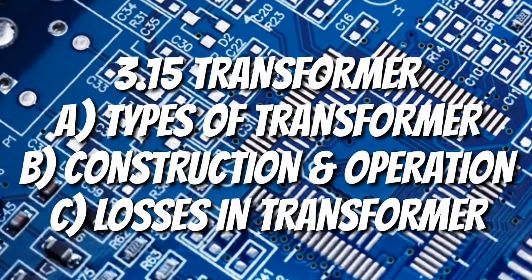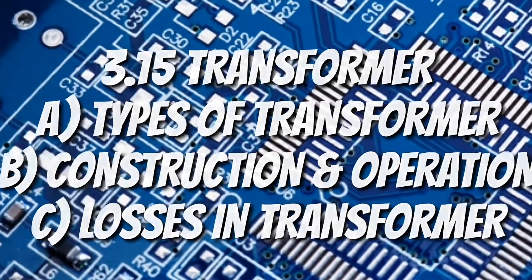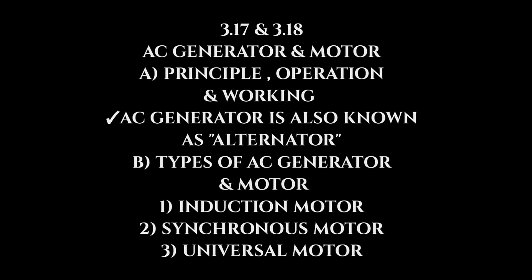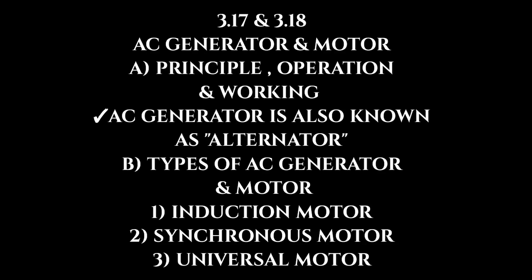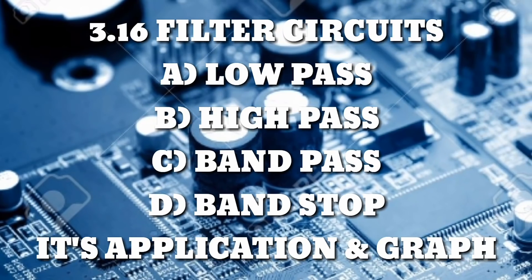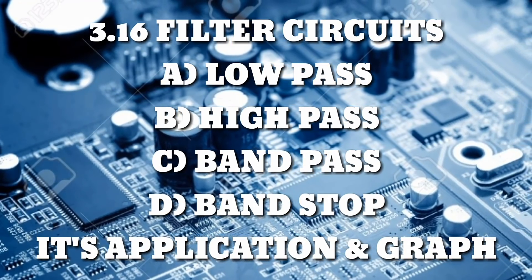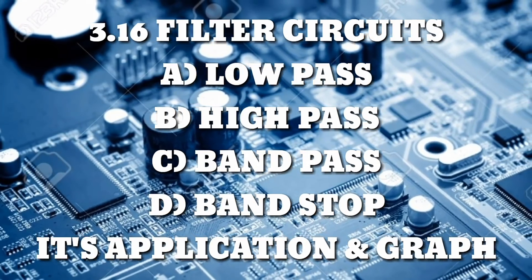Next, 3.15 is the transformer. It generally includes the types of transformer, its construction, operation and losses, which I have already covered in DC generator. Now the most important topics are 3.17 AC generator and 3.18 AC motor. In AC generator, you need to remember the principle, operation and construction of AC generator and motor. Also remember that an AC generator is also known as an alternator. The types of AC generator and AC motor include induction motor, three-phase induction motor, synchronous motor, universal motor and the methods used in these motors. Also, I didn't forget 3.16, the filter circuit, which includes low-pass, high-pass, band-pass and band-stop filter circuits. Study the function and application of such circuits and the diagram and graph, which they can ask in MCQs.